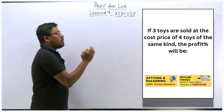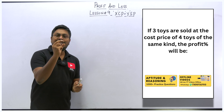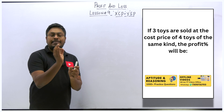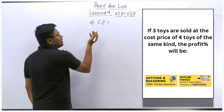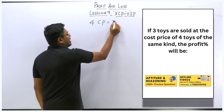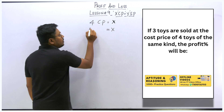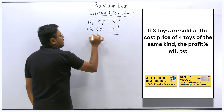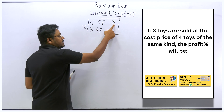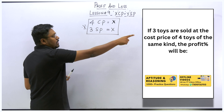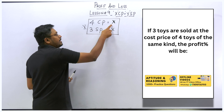Question number one: three toys are sold at a cost price of four toys of the same kind — find the profit percentage. The important data given is: three toys' selling price equals four toys' cost price. We don't know the actual cost price of four toys, so let's call it x. Four toy cost price = x, and that same amount x equals three toys' selling price. Once you understand this, solving lesson nine questions becomes very easy.